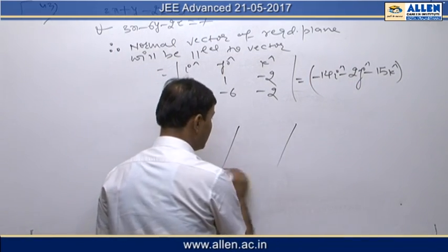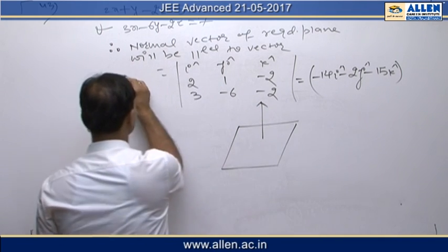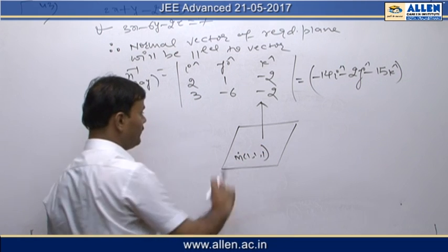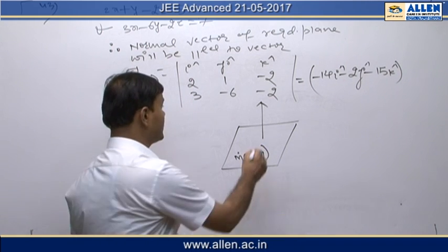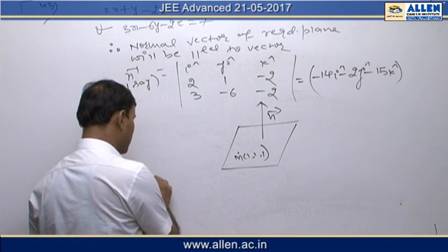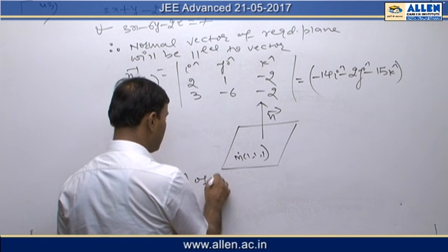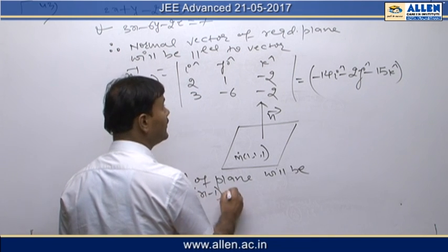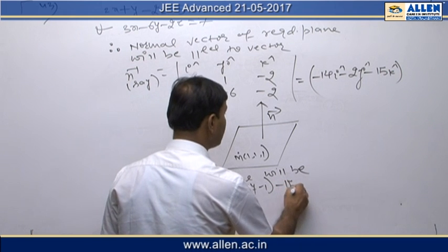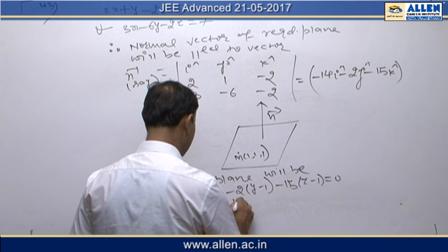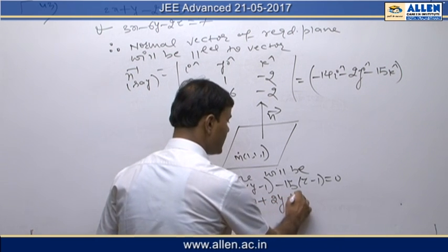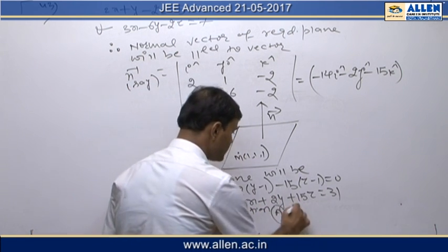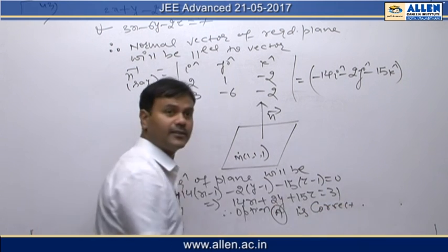This is the normal vector n of our required plane, and the plane passes through the point (1, 1, 1). Since the point on the plane and the normal vector are both known, the equation of the plane is: -14(x - 1) - 2(y - 1) - 15(z - 1) = 0, which on solving gives 14x + 2y + 15z = 31. Therefore, option A is correct.